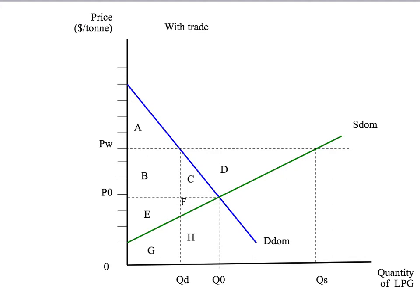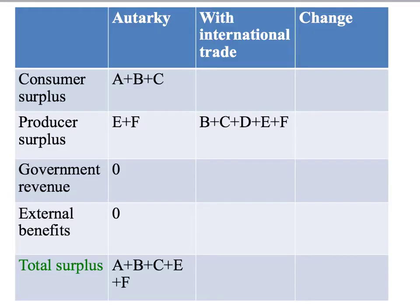Now let's look at the situation when we have trade, starting with producers first. Remember producers get a higher price PW and they sell QS units. So producer surplus with trade is the area above the supply curve up to the price producers receive and up to the quantity they sell — that's area B, C, D, E, and F. Producer surplus has gone up by B plus C plus D.